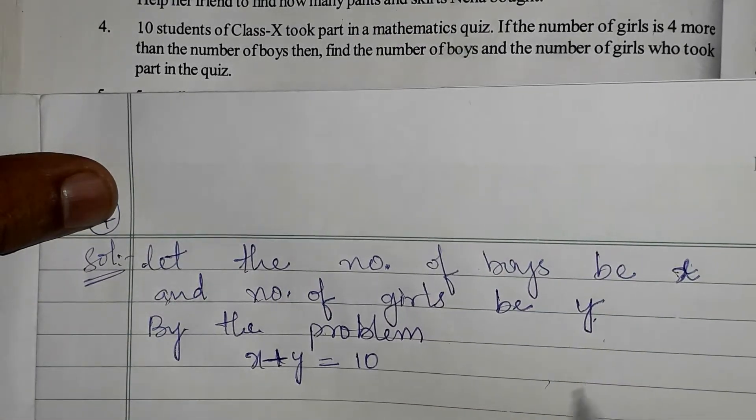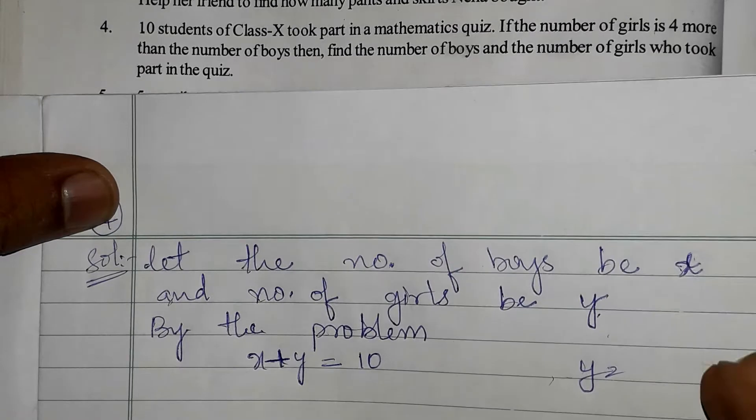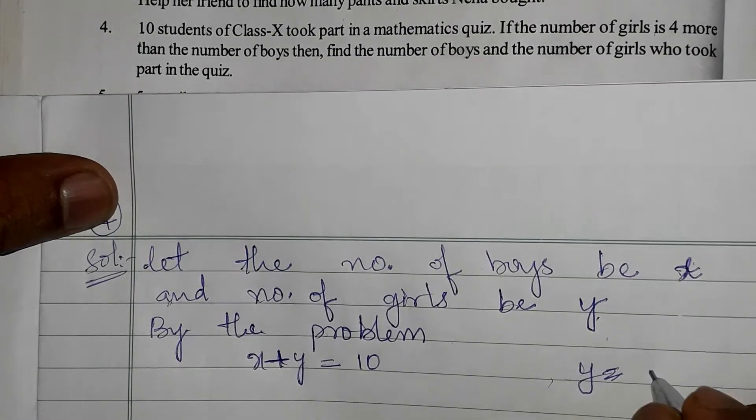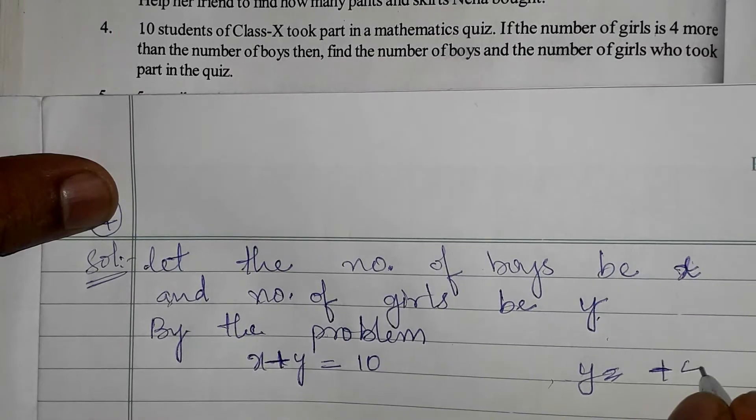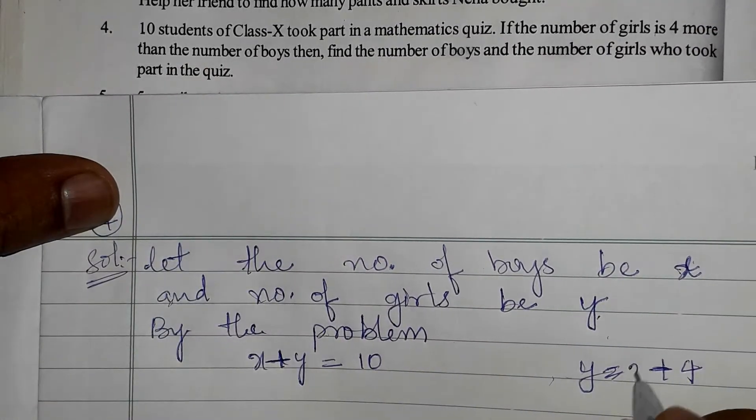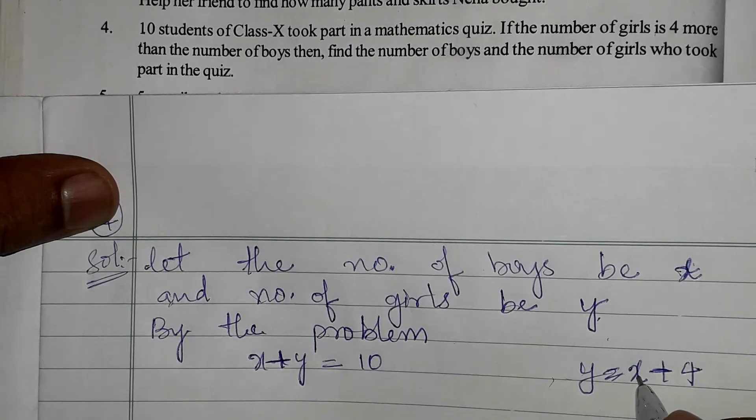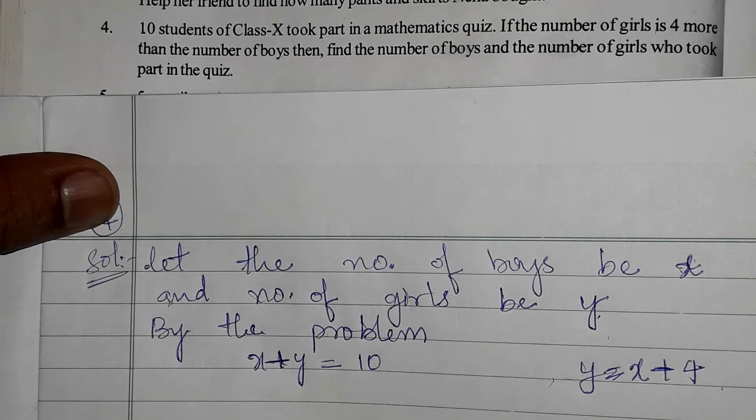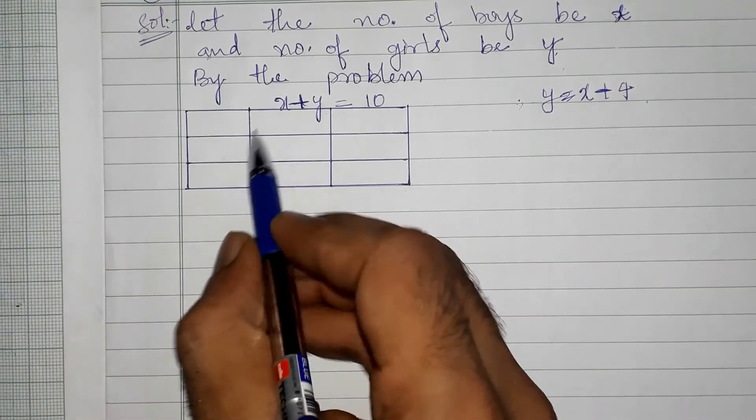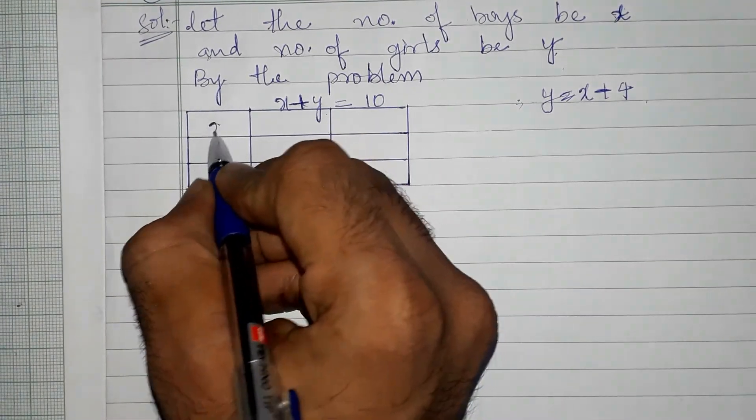Four more than the number of boys, so y is equals to x plus four. Let us solve it. So let us draw the box - it is x, y, and x comma y.